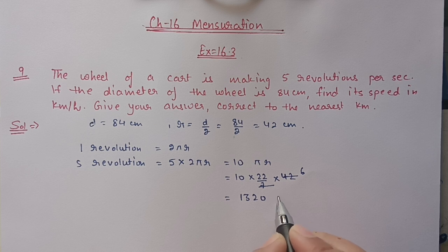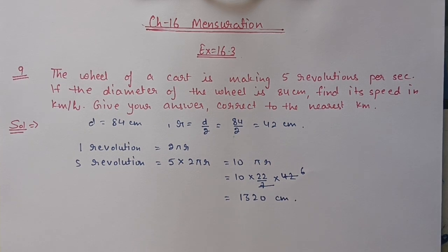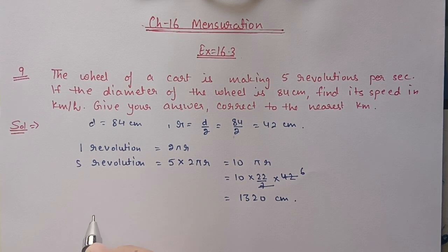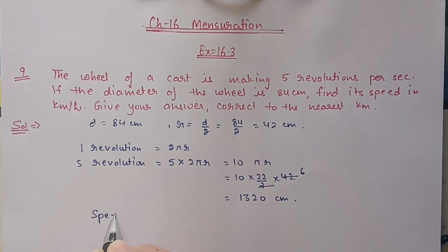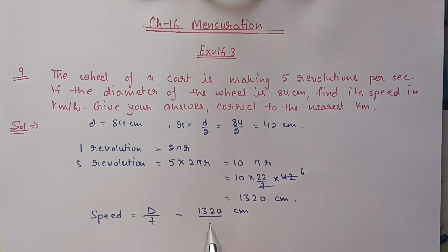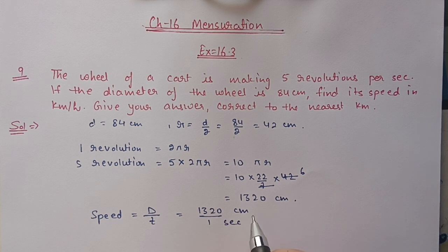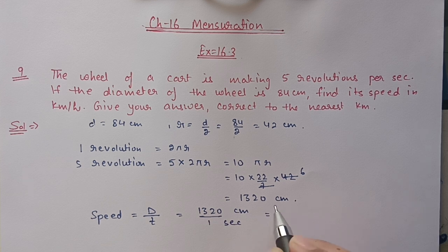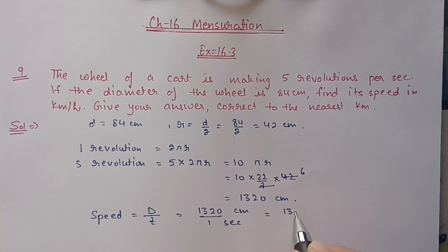We are getting 1320 centimeters as the distance covered in one second. Speed equals distance upon time, so speed equals 1320 centimeters per second. We now need to convert this into kilometers per hour.